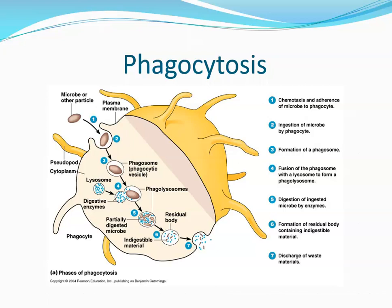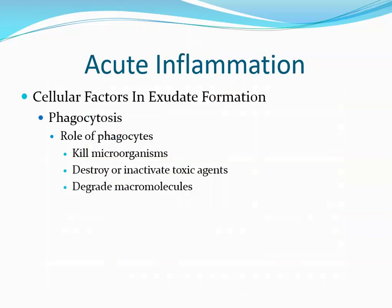This diagram illustrates the process: chemotaxis brings the cell and agent together, the phagocytic cell sends out pseudopods to engulf it into a phagosome, lysosomes fuse to digest and destroy the particle, and then waste products are released. This entire process takes roughly 20 minutes from start to finish. The role of phagocytic cells is first and foremost to kill microorganisms, destroy or inactivate toxic agents, and degrade macromolecules.